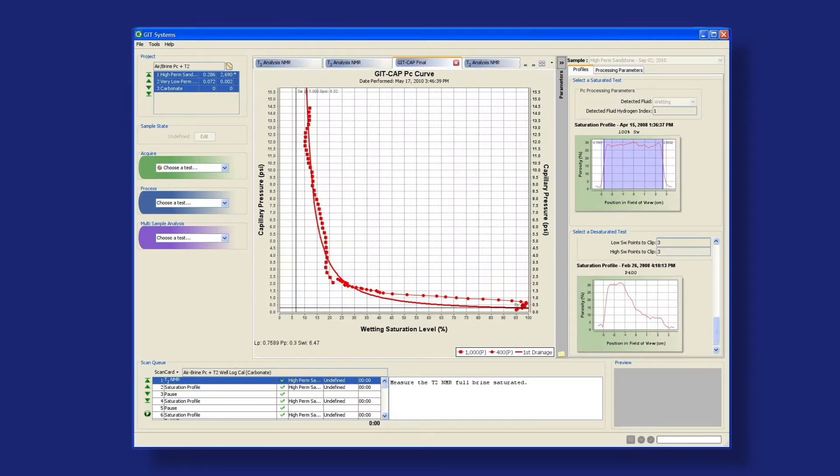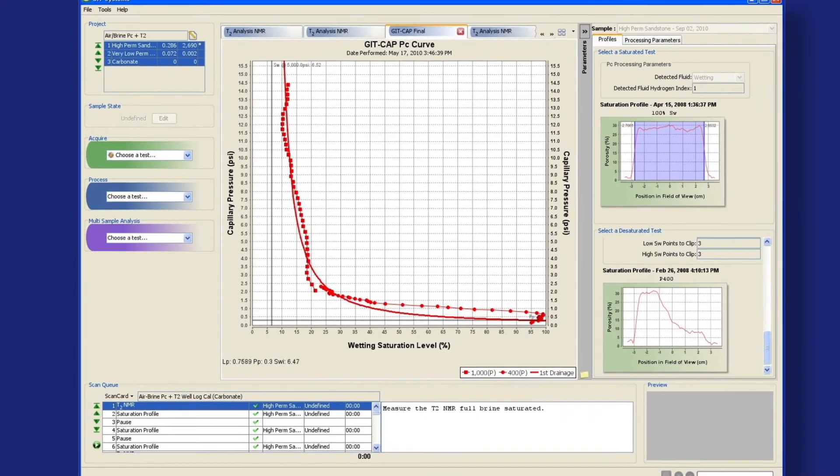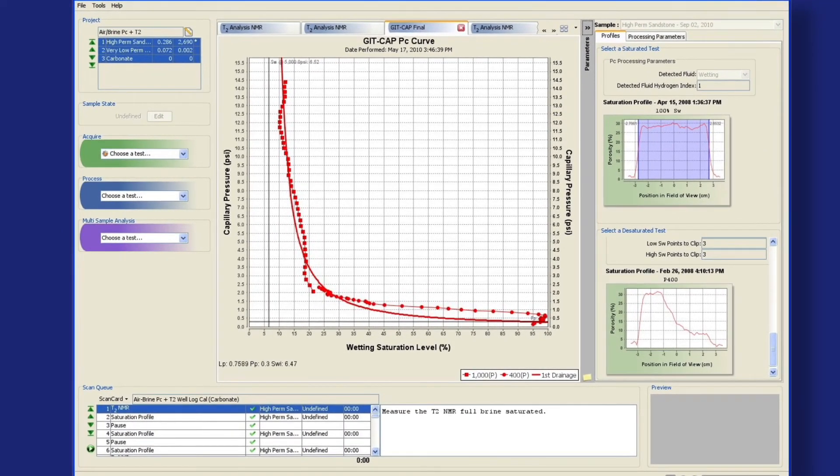All calculations are carried out within the Git software. The result is a very detailed PC curve with no errors or estimations, needing just three spin speeds, but generating many more data points than conventional centrifuge methods.